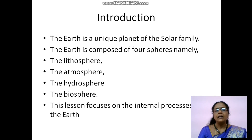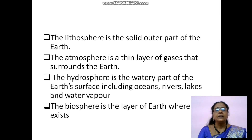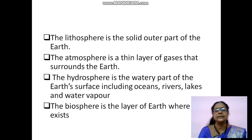This lesson on lithosphere focuses on the internal processes of the earth. What do you mean by lithosphere? Litho means rock, sphere means round in shape - it is rock ball in shape. Lithosphere is the solid outer part of the earth. Atmosphere is a thin layer of gases that surrounds the earth.